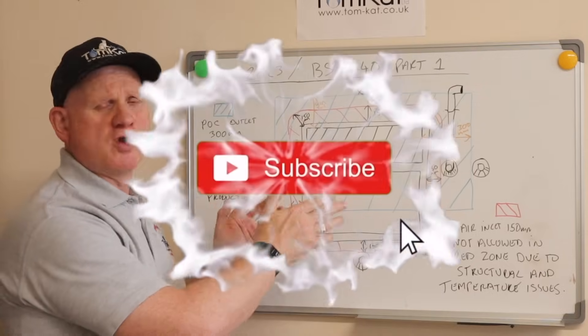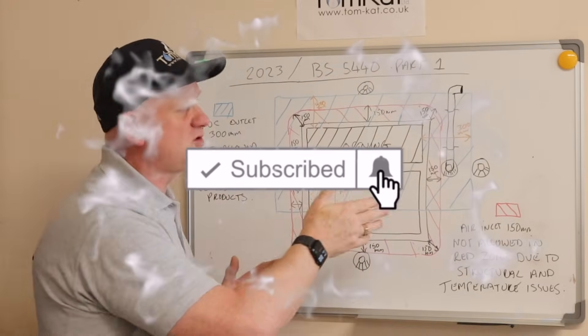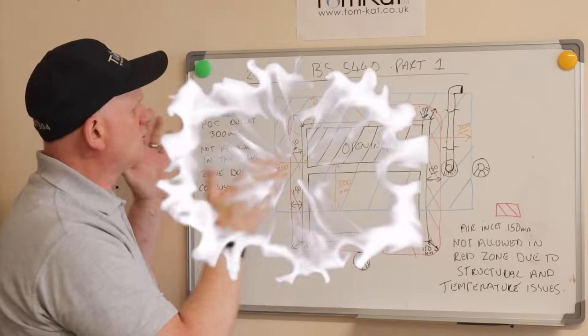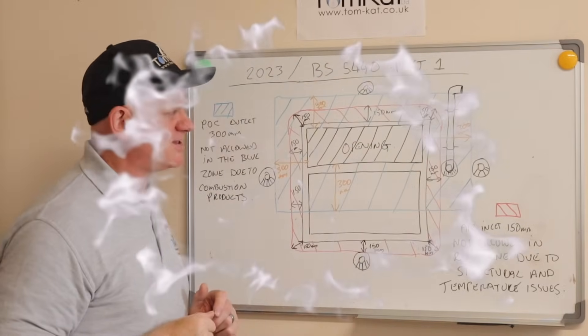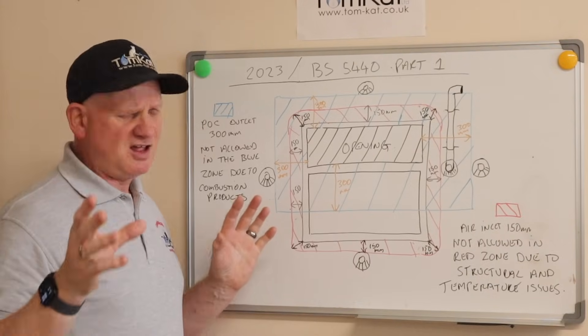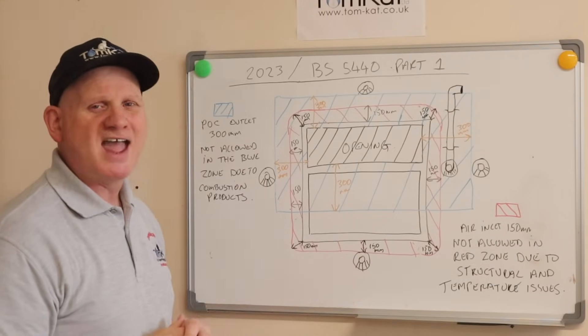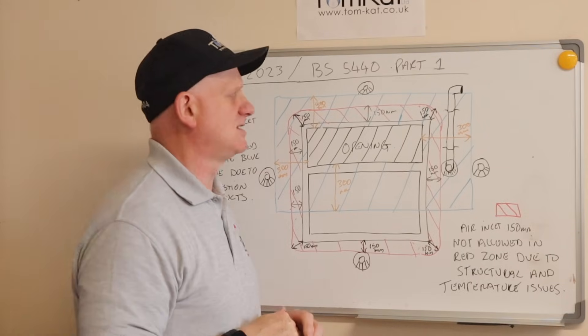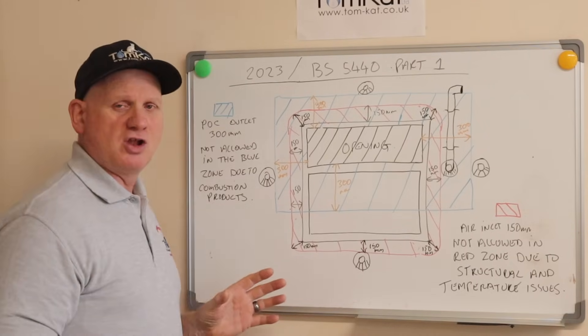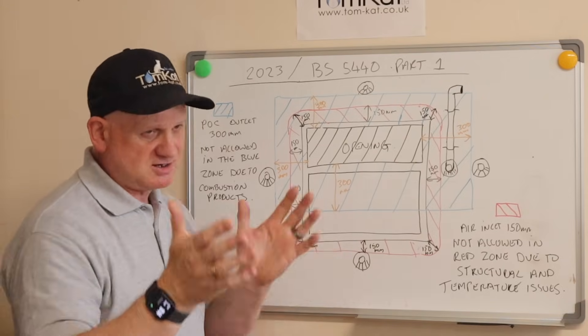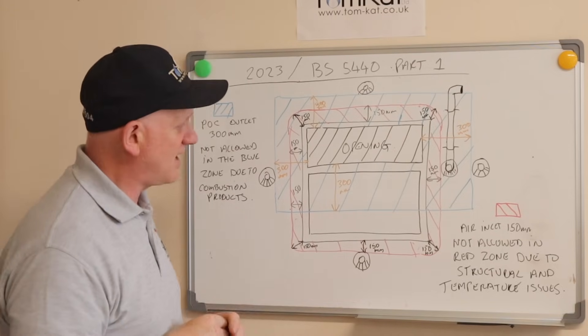So let's have a look first at what BS 5440 says about plume management kits. Now BS 5440 part 1, which is for flues, part 2 is ventilation, was revised in 2023. So this is what it says about when you can use a plume management kit.